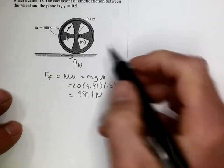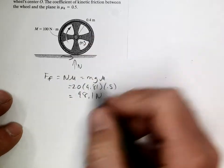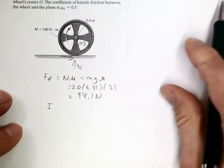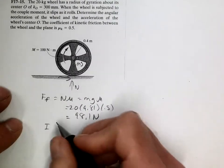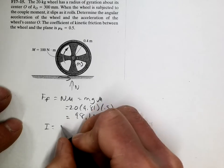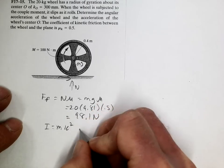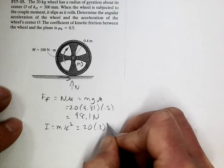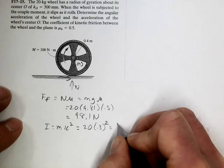Now, to find the rotational acceleration, we're going to need I, so let's find I, because they give us k for some reason. So I equals mk squared, which is 20 times 0.3 squared equals 1.8.